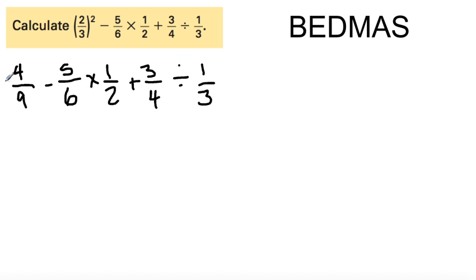So next step, we have a subtraction here, then multiplication, and we have division. So what we're going to do first, we're going to do 5 sixths times 1 half, and we could actually do 3 quarters divided by 1 third. We'll do that in one step, just to save me some space here. So 4 ninths stays, let me carry that over, minus 5 sixths times 1 half. So 5 times 1, just multiply across, no common denominator yet, is 5. 6 times 2 is 12. Plus,